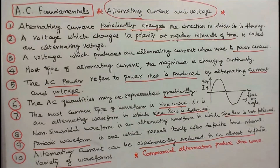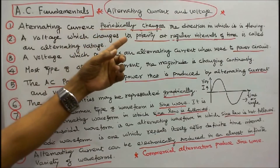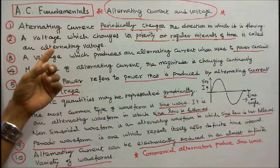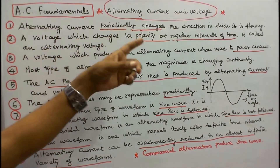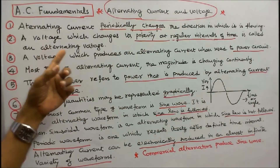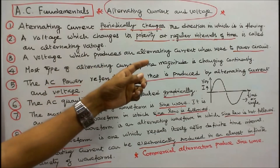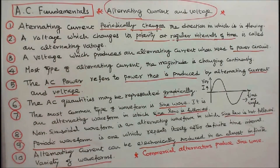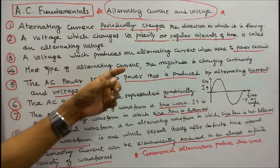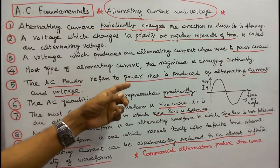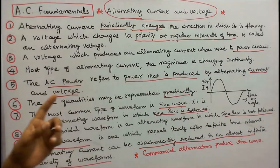This class we discuss about AC fundamentals — alternating current and voltage. Alternating current periodically changes the direction in which it is flowing. A voltage which changes its polarity at regular intervals of time is called an alternating voltage. A voltage which produces an alternating current when used to power a circuit. In most types of alternating current, the magnitude is changing continuously. The AC power refers to power that is produced by alternating current and voltage.